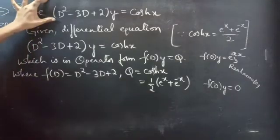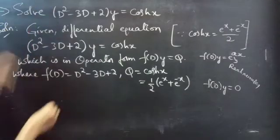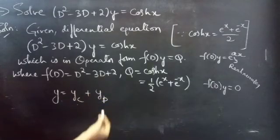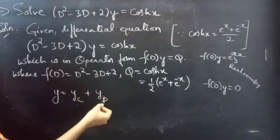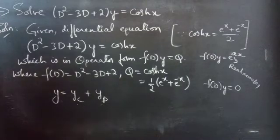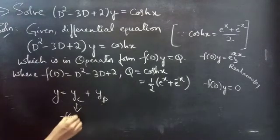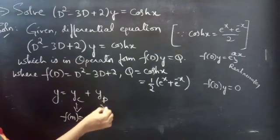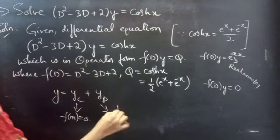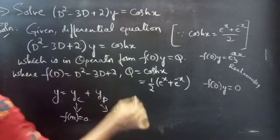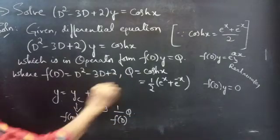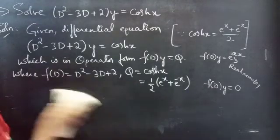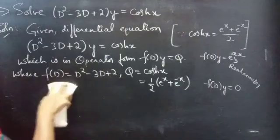Firstly, we need to find the solution to this problem, which is given by y = yc + yp, where yc is the complementary function and yp is the particular integral. We get yc using the auxiliary equation f(m) = 0, and we will get yp using (1/f(D))·Q.